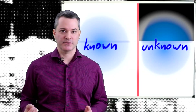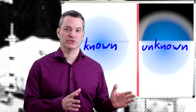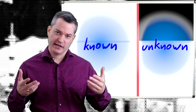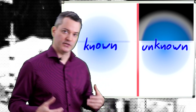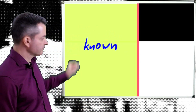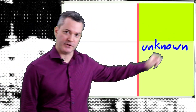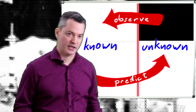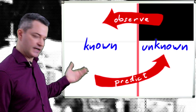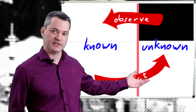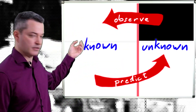We will further need to distinguish between known and unknown quantities, both with regard to the physical observables and to the mathematical model. Known quantities will be placed on the left half of the whiteboard; unknown quantities on the right half. These halves are also connected in two directions: known quantities are the basis for predicting unknown quantities, and unknown quantities become known quantities when we observe them.